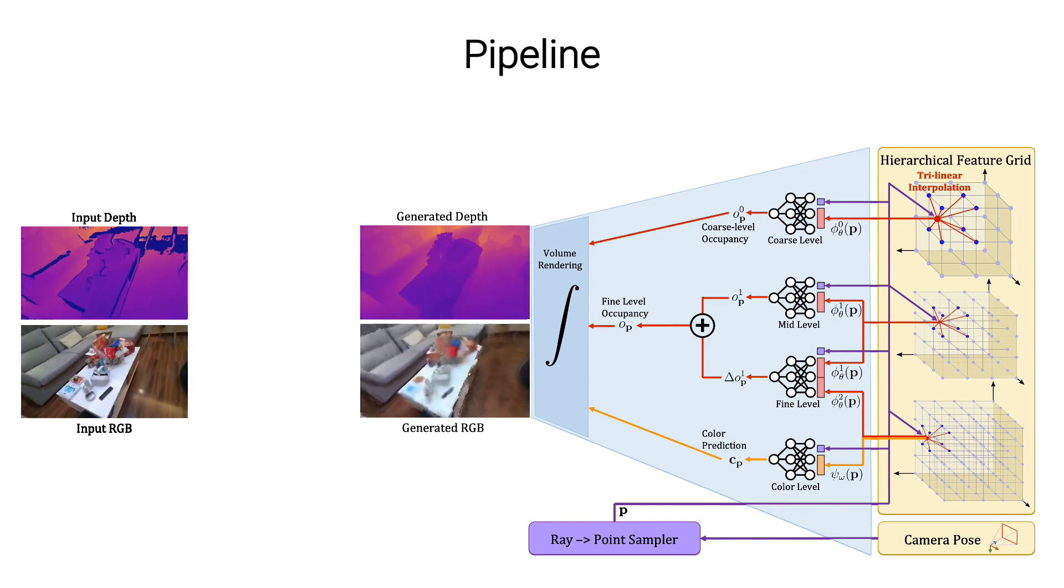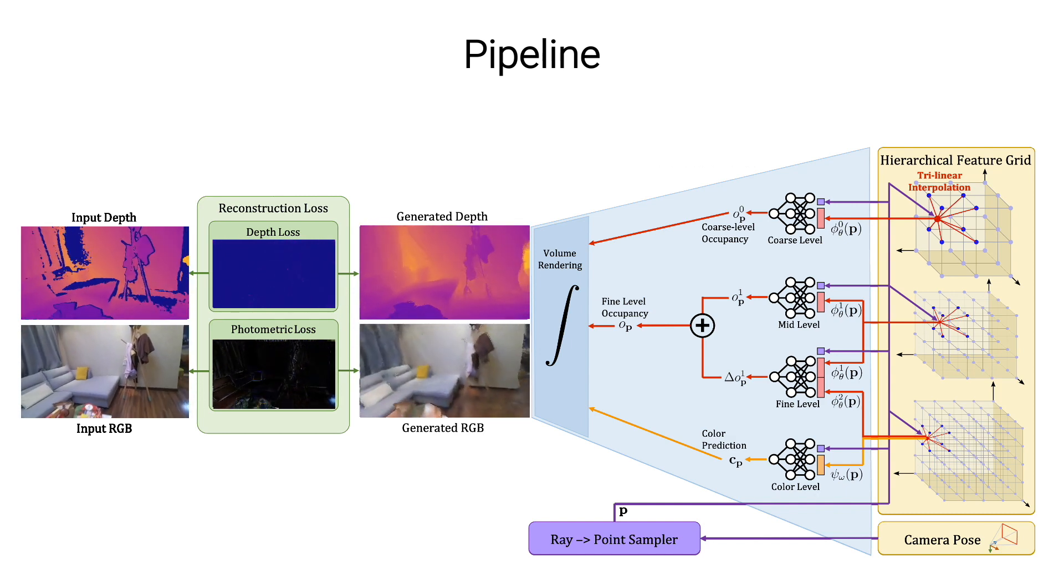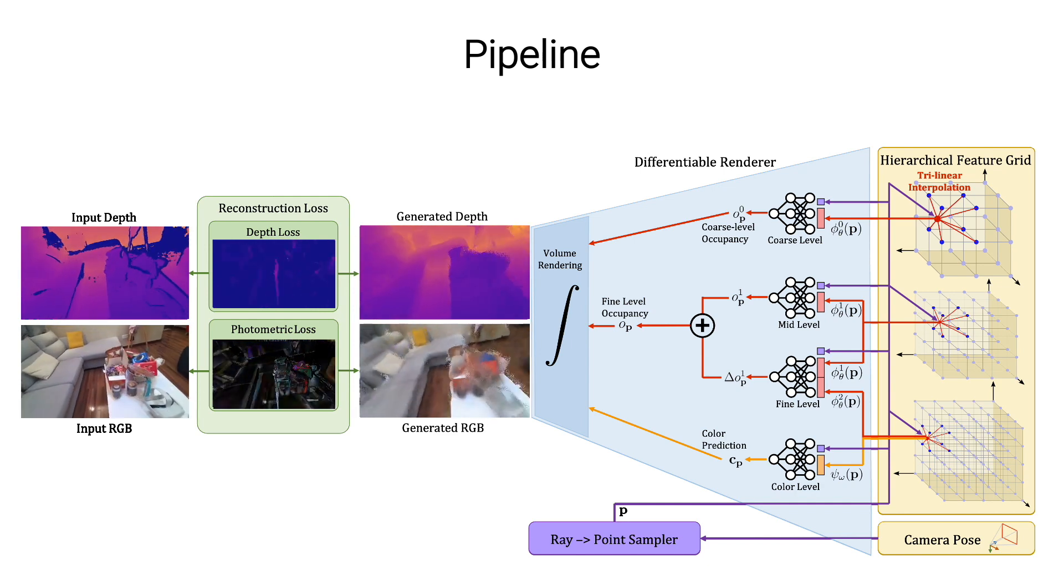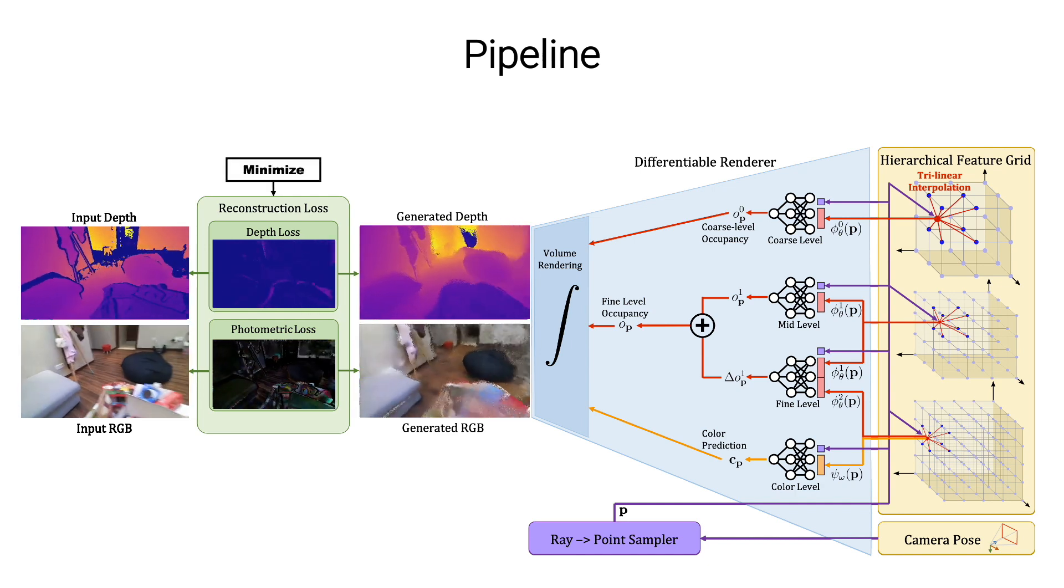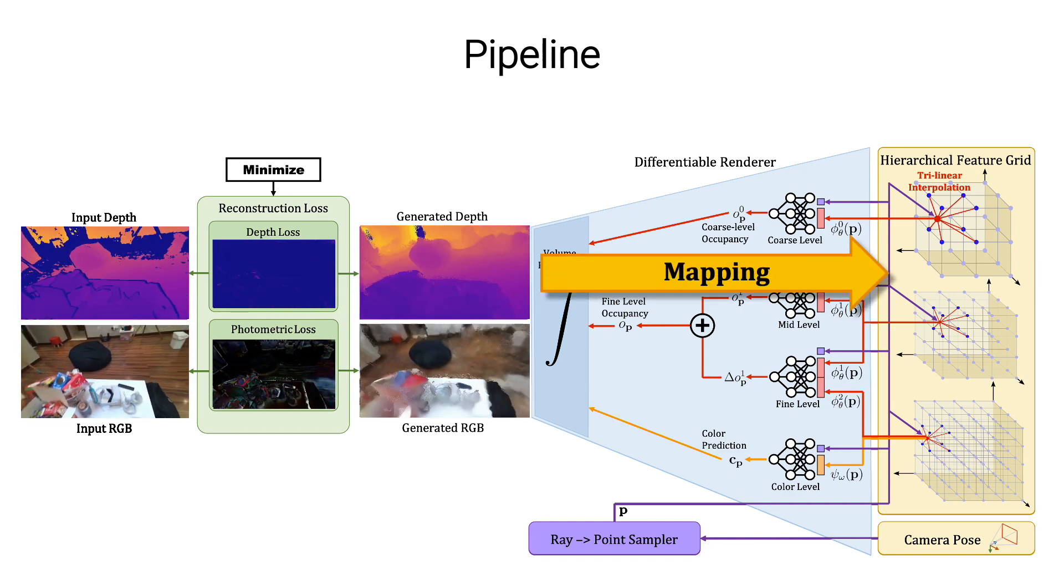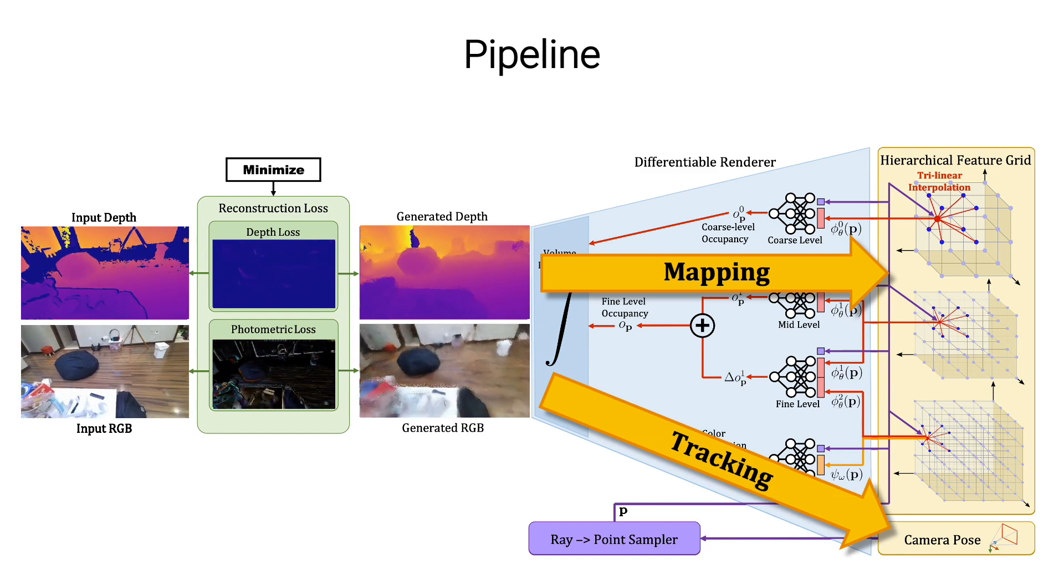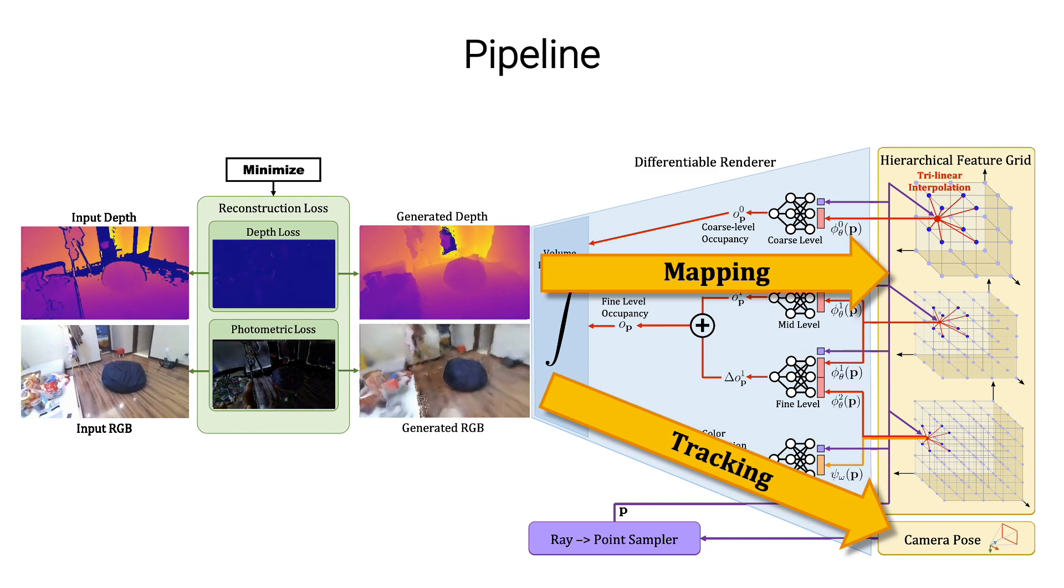For this purpose, we look at the reconstruction error between the input and the generated images. And since our rendering process is differentiable, we are able to back-propagate the reconstruction error in an alternating fashion. For mapping, we back-propagate to optimize the hierarchical feature grid. And for tracking, we optimize the camera parameters. And this is the overall pipeline.